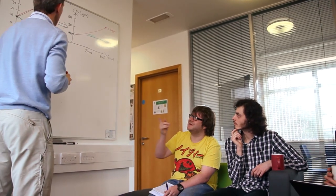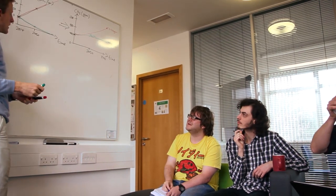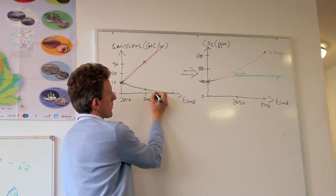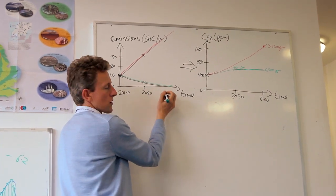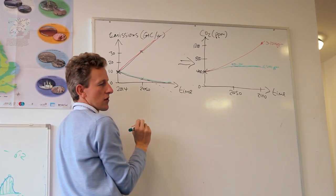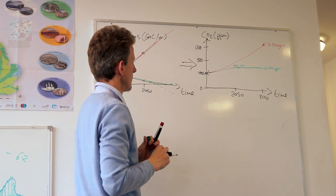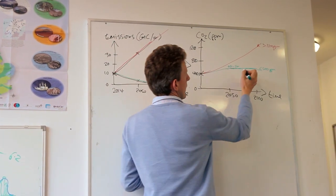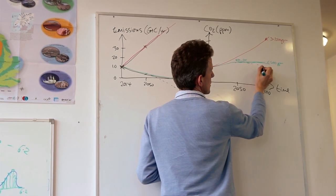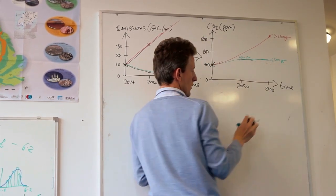Those emissions could also go negative. From the geoengineering video earlier in the course, we might have to actively remove carbon from the atmosphere - going below the axis - if we want to stay within the canonical two degrees of warming. That's really the only way we might bring concentration back down later in the back end of this century.